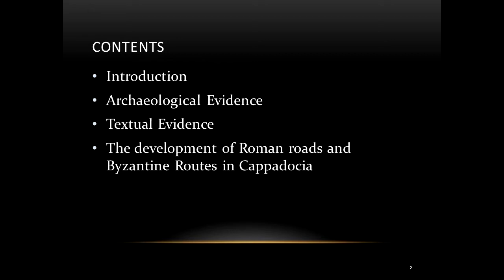The region of Byzantine Cappadocia extended to the boundaries of the Euphrates to the east, Pontus to the north, Galatia to the west, and the Taurus Mountains to the south of Asia Minor. In the late Roman and early Byzantine period, two main routes radiating from Constantinople to the Cilician Gates passed through Cappadocia. This paper presents two main arterial networks of communication, including the pilgrim's route and the imperial military route.